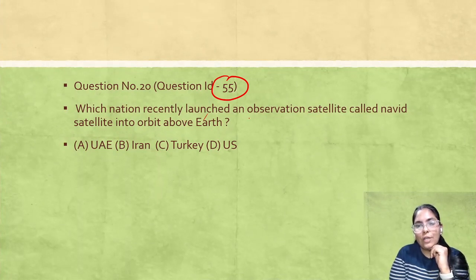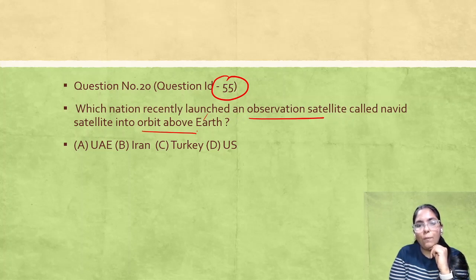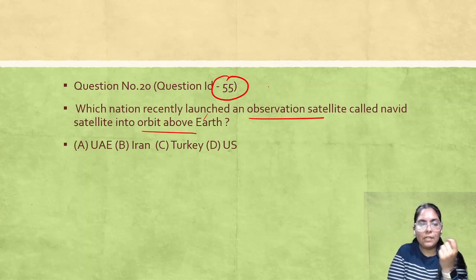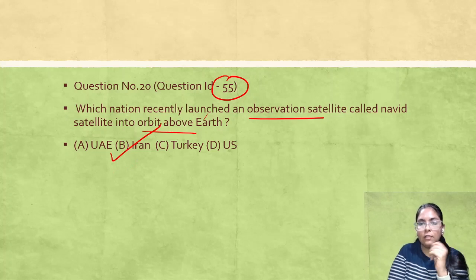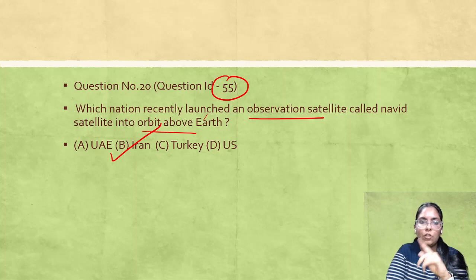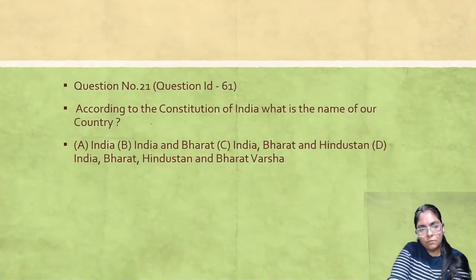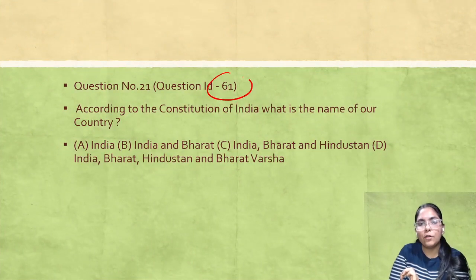Question ID 55: Which nation recently launched an observation satellite called Navit satellite into orbit above Earth? This is a basic current affairs question — no prior political science knowledge helps here, just awareness matters. The correct answer is Iran. The Navit satellite was launched by Iran as an observation satellite into orbit above Earth.